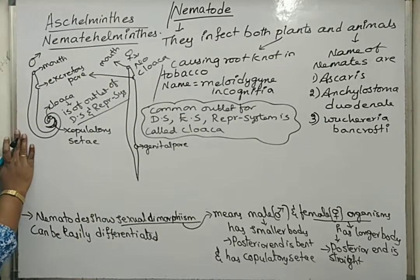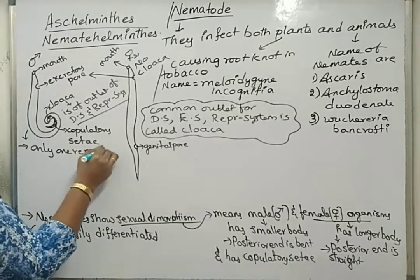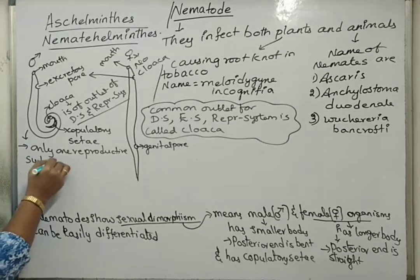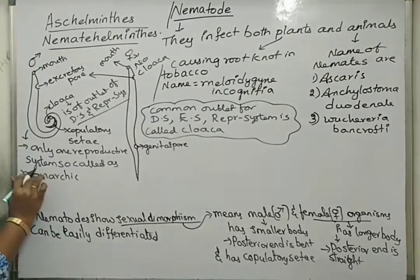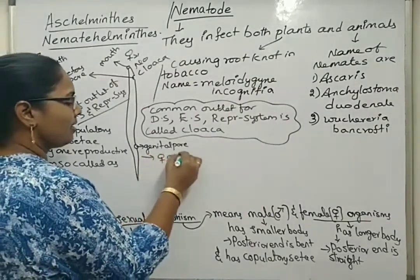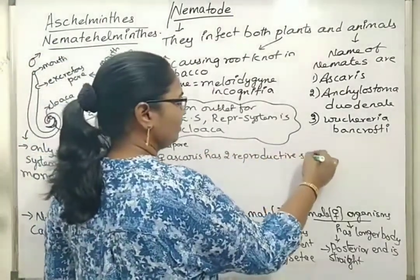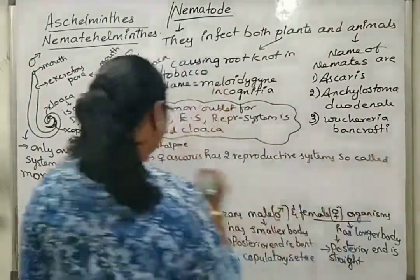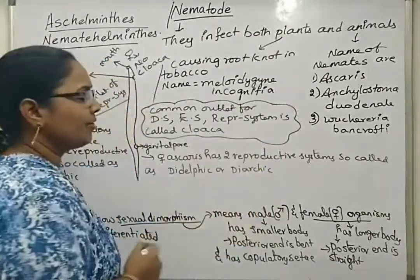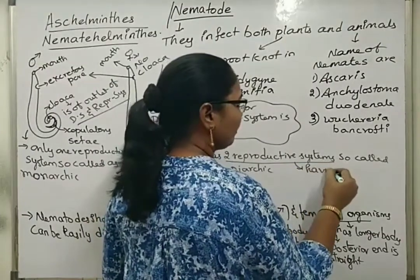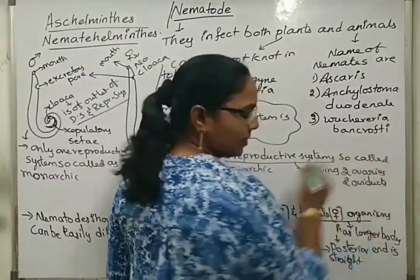Internally, the male nematode has only one reproductive system, so it is called monorchic. The female Ascaris has two reproductive systems, so it is called didelphic or diarchic — having two ovaries, two oviducts, and two uteruses.